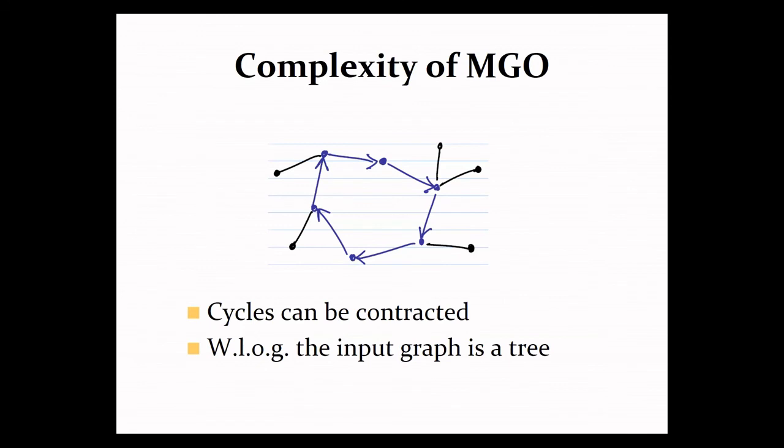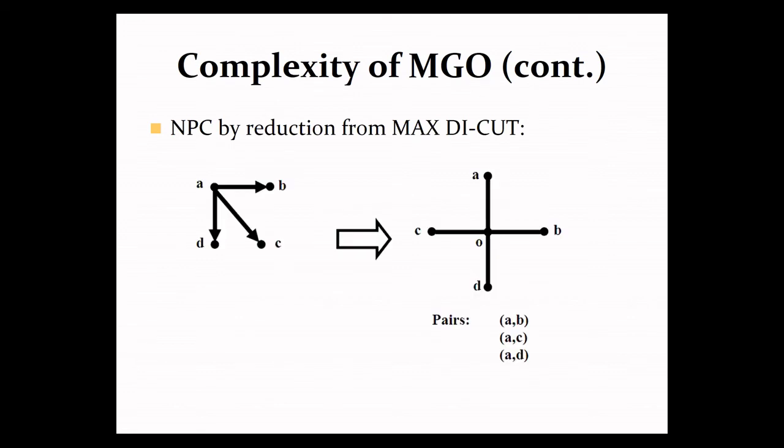So even though the network is a tree, the problem still turns out to be NP complete. And we can show it by reduction from maximum directed cut, where to make a long story short, given an input directed graph to the max die cut problem, you take its vertices and form from them a star graph in which you connect all of them to a center vertex. And for each original edge of the directed graph, you make a pair, a knockout pair, in the reduced graph. And now under this reduction, one can show that there is a one-to-one correspondence between edges that cross the cut in the original graph and pairs that are satisfied in the reduced graph.